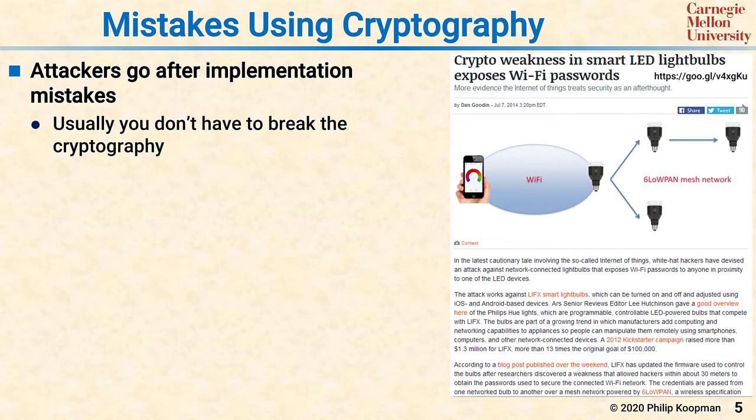Once you have the first light bulb set up, it automatically configures any other light bulb by sending the Wi-Fi password to it. So anything that says 'hey, I'm a light bulb' gets the Wi-Fi password — including an attacker with a cell phone that says 'hey, I'm a light bulb.' Whatever light bulb is in the house will cough up the Wi-Fi password, and now the attacker is into the entire network.